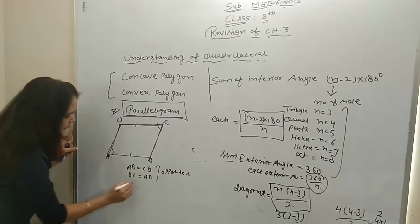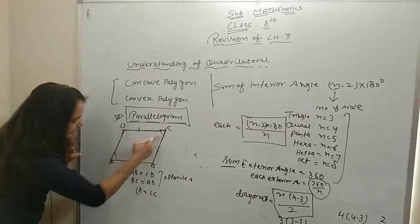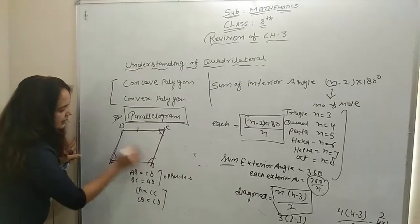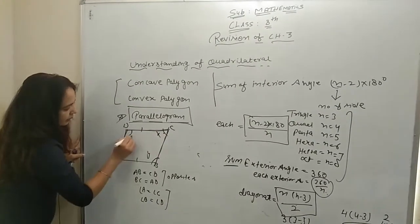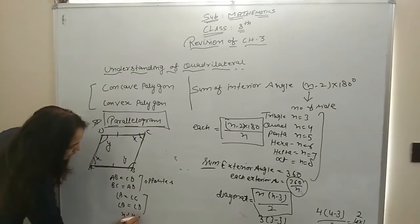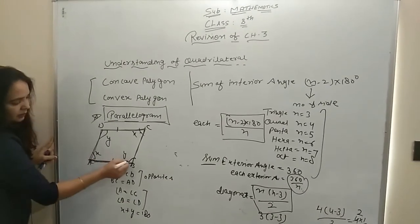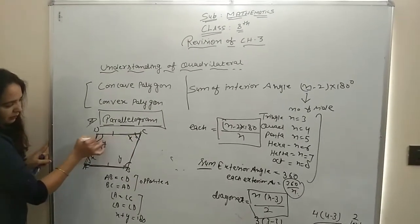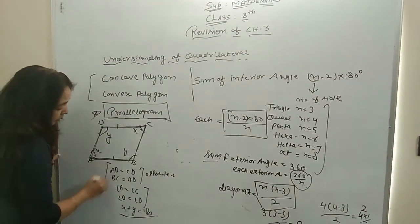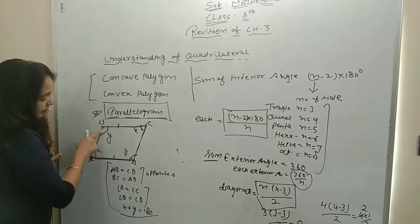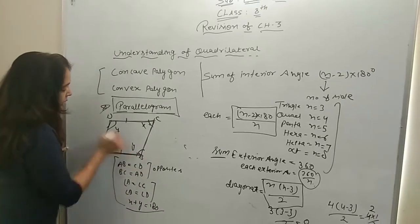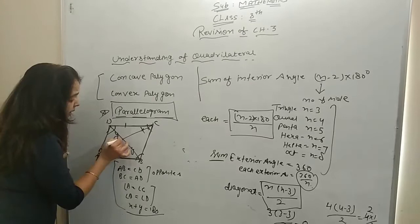If I talk about angles, opposite angles are equal — angle A equals angle C, and angle B equals angle D. These are opposite angles. If this is X, then the opposite angle is also X; if this is Y, then the opposite is also Y. And the sum of adjacent angles is 180°, so X plus Y equals 180°. These are adjacent angle pairs, and their sum is 180°. The properties we use are: opposite sides are equal, opposite angles are equal, adjacent angles sum to 180°, and diagonals bisect each other.